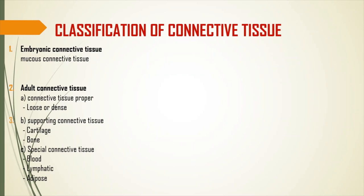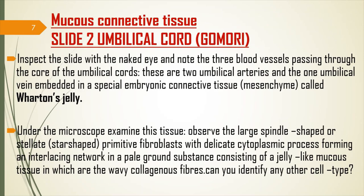Connective tissue can either be embryonic connective tissue, also referred to as mucous connective tissue. Secondly, we have adult connective tissue, under which there are three categories: connective tissue proper, which can be either loose or dense; supporting connective tissue, which is cartilage or bone; and special connective tissue, which includes blood, the lymphatic system, and adipose tissue.